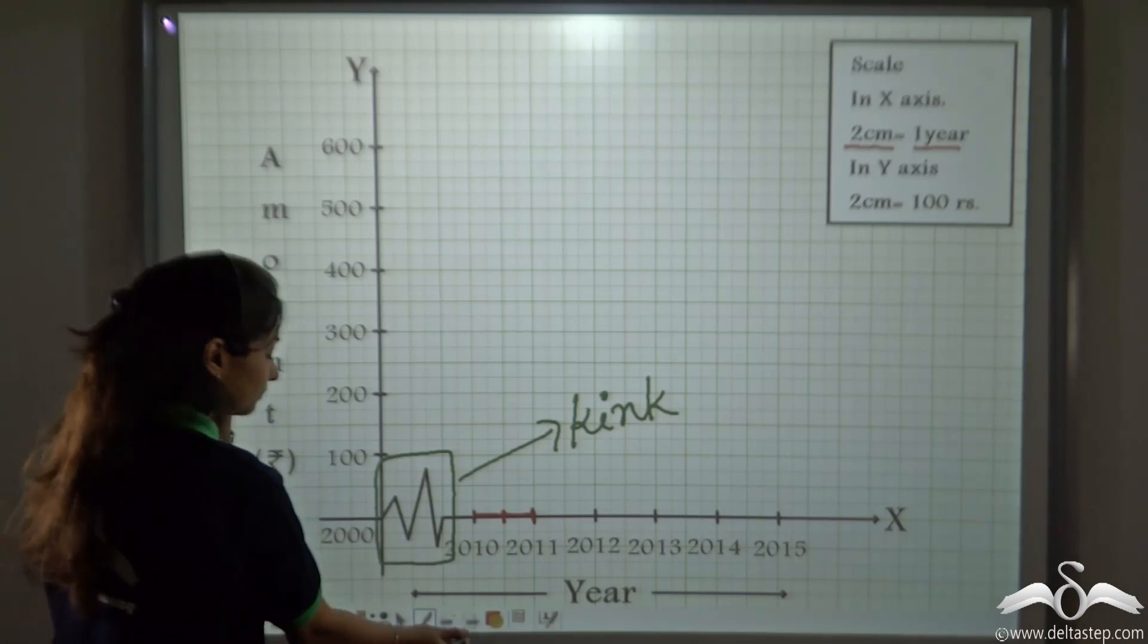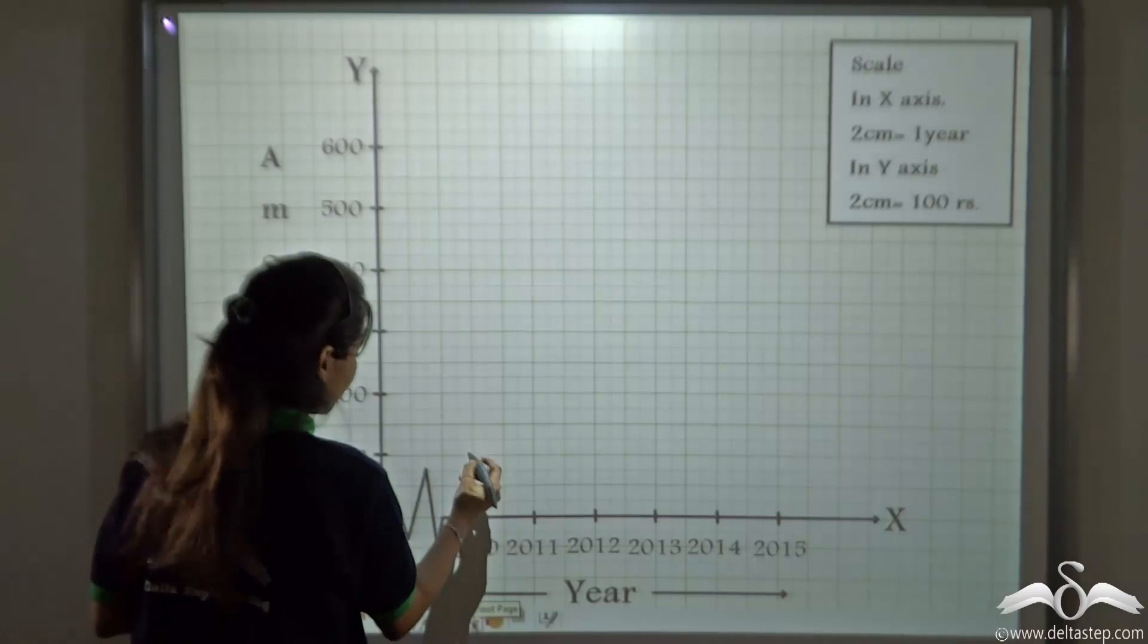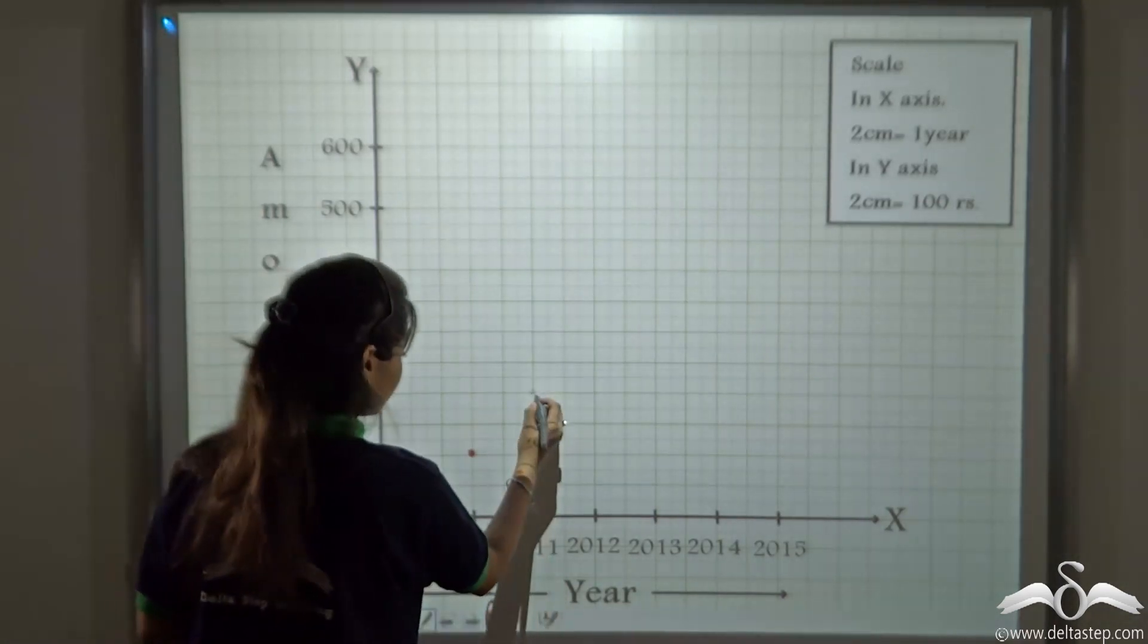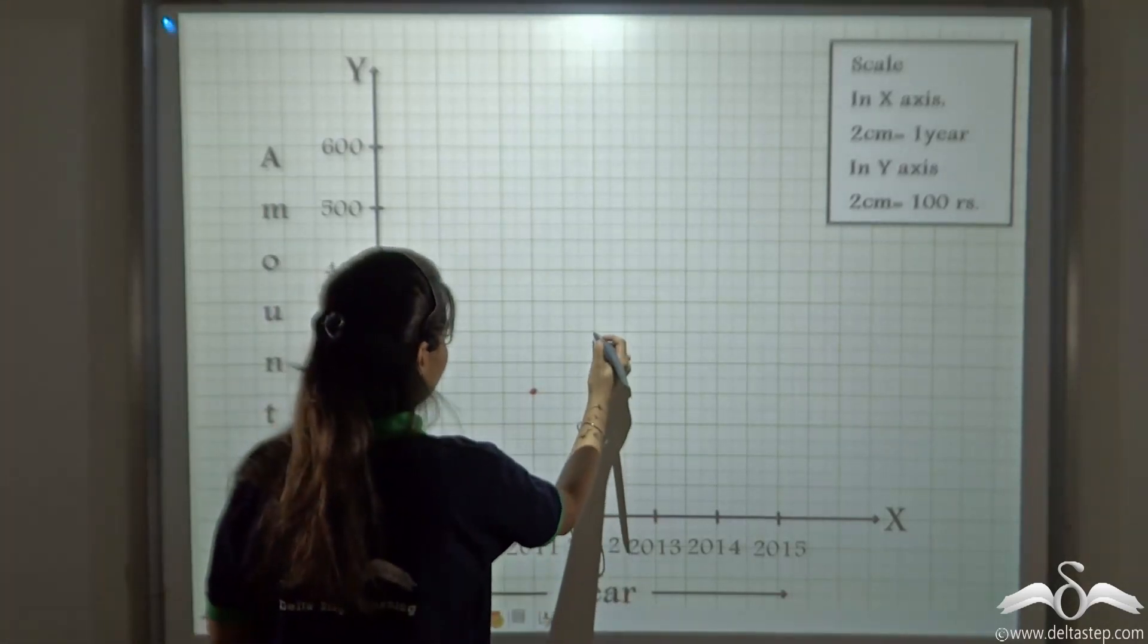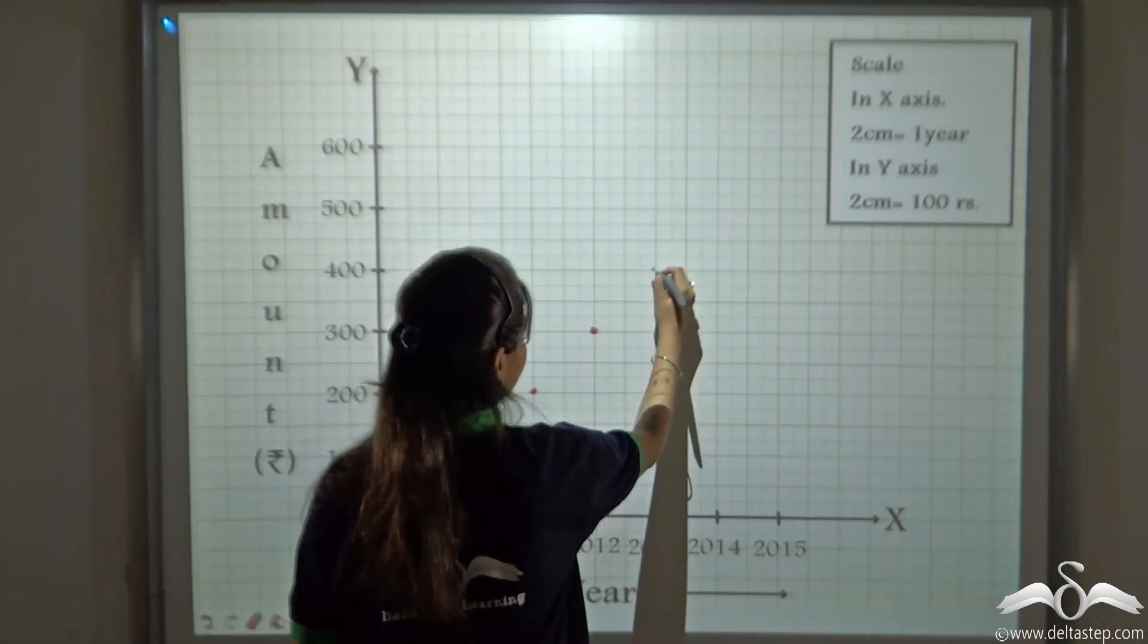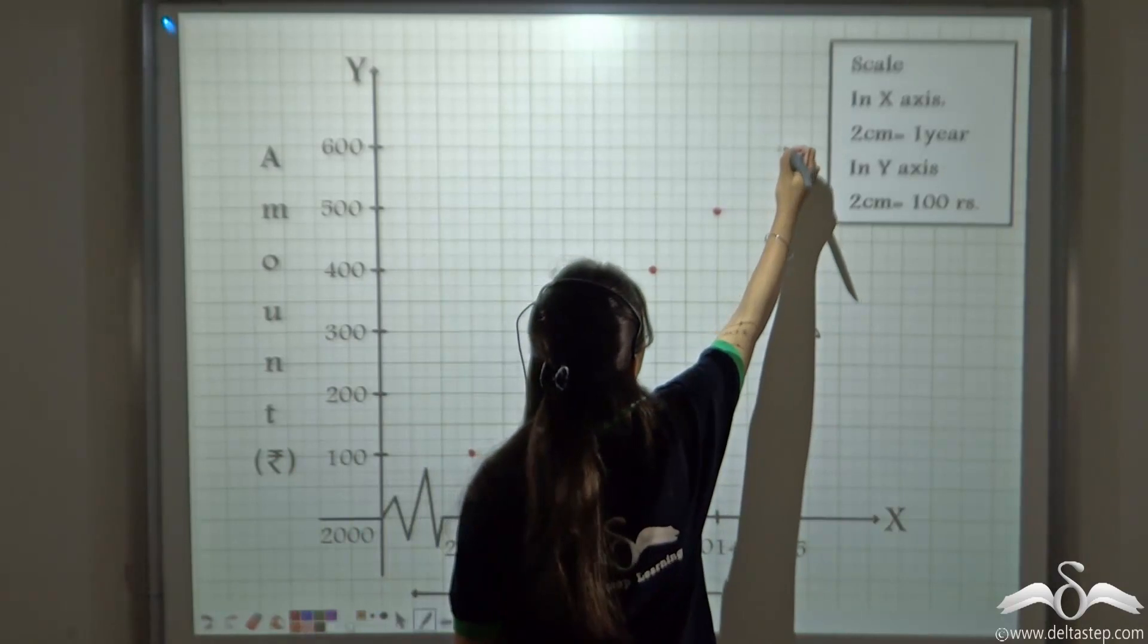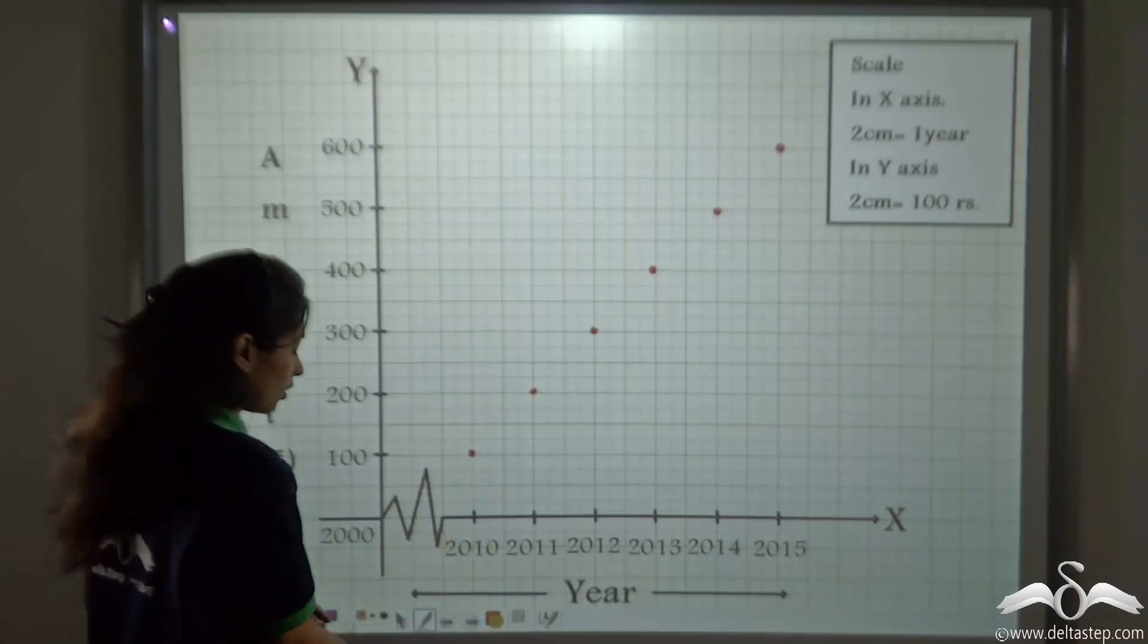So now let's start plotting. Well, you got rupees 100 in 2010. So plot that. Then you got 200 in 2011, then 300 in 2012, 400 in 2013, 500 in 2014 and so on like 600 in 2015. So we have successfully plotted these points. It looks something like this.